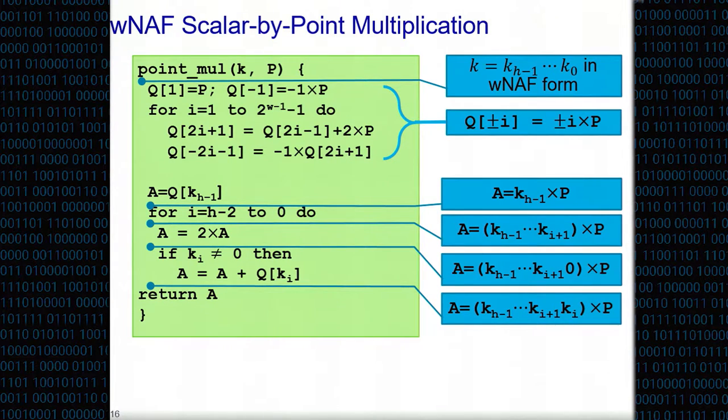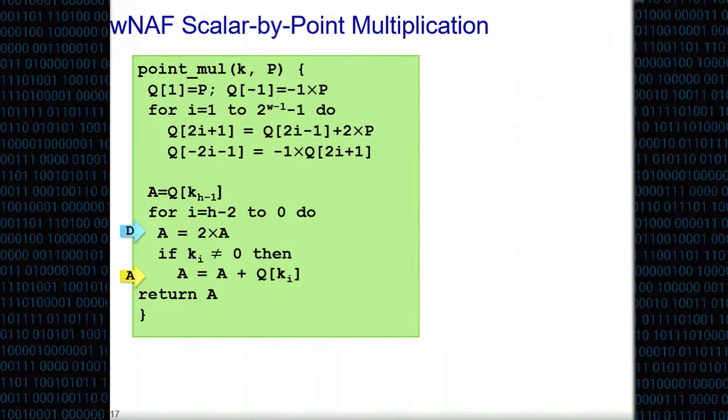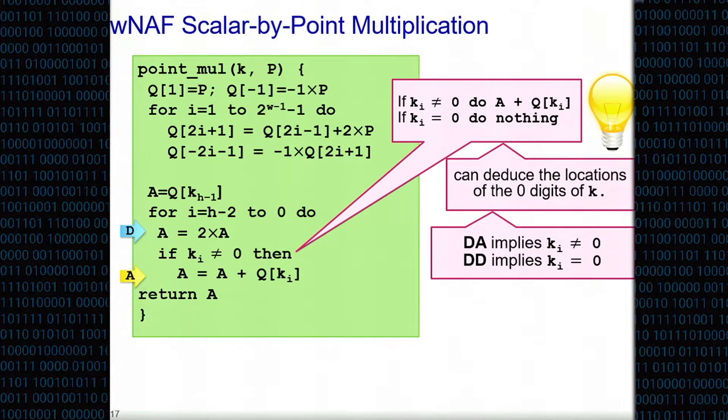Let's cryptanalyze this. What can we learn from here? First of all, we have these two operations: double and add. These are computationally heavy - ugly formulas. Moreover, these are two different ugly formulas, one for double, one for add, completely different formulas. If you happen to see a side channel leakage corresponding to a double and corresponding to an add, it's very easy to distinguish the two. This alone reveals information about the location of the zero digits of k.